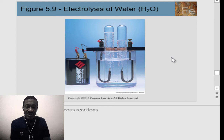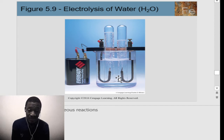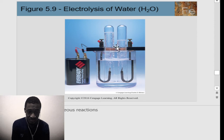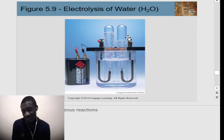Electrolysis is the splitting of water using electricity. With a battery providing current through a cathode and anode in water, the water splits into its components. Oxygen gas collects at one electrode and hydrogen gas at the other. The negative electrode attracts positive ions and the positive electrode attracts negative ions — that's how electrolysis works to separate water into hydrogen and oxygen.